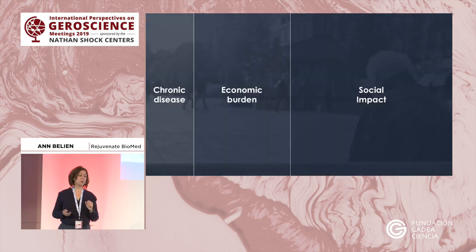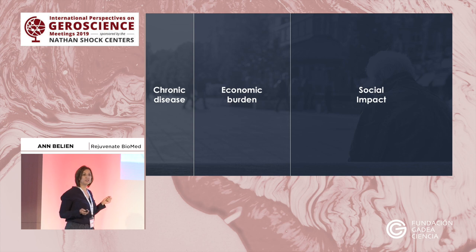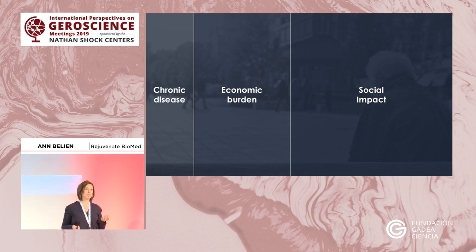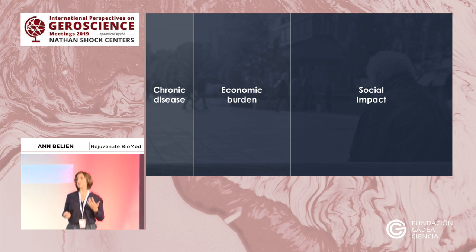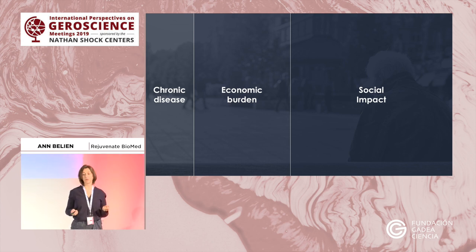Living longer is not only good news. The truth is that by the age of 65, we start to suffer from age-related diseases. And these age-related diseases are chronic diseases, which means they have a huge impact on the healthcare system — and probably worst of all is the impact on the social activities of the patients themselves, but also on their families.